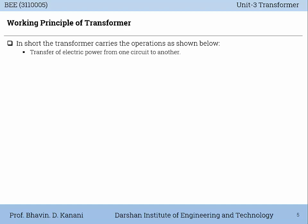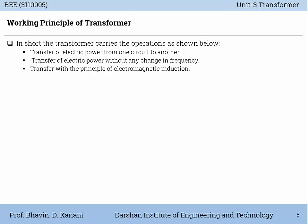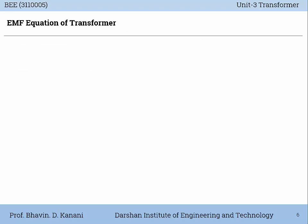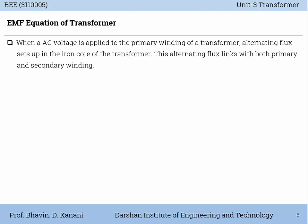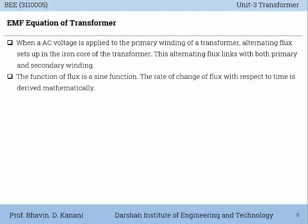In short, the transformer carries out the following operations: transfer of electric power from one circuit to another; transfer of electric power without any change in frequency; transfer with the principle of electromagnetic induction — the two electrical circuits are linked by mutual induction. When an AC voltage is applied to the primary winding of a transformer, alternating flux is set up in the iron core. This alternating flux links with both primary and secondary windings. The flux is a sine function and the rate of change of flux with respect to time is derived mathematically.